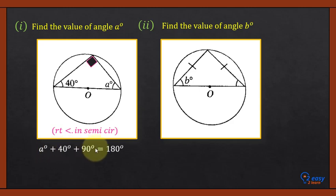So angle a plus 40 plus 90 is equal to 180. So we will subtract these two angles from 180 degrees. So value of angle a is 50 degrees.